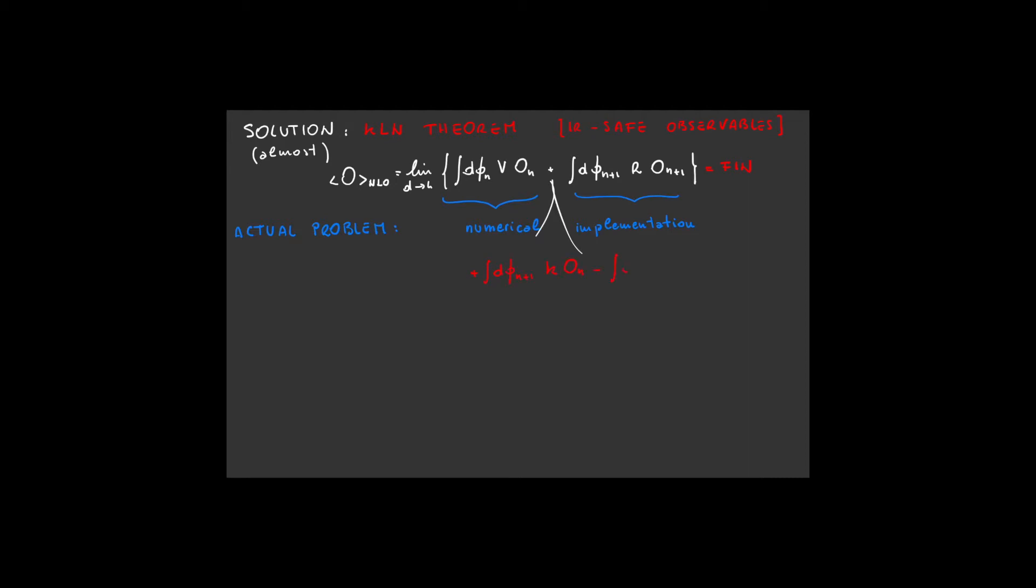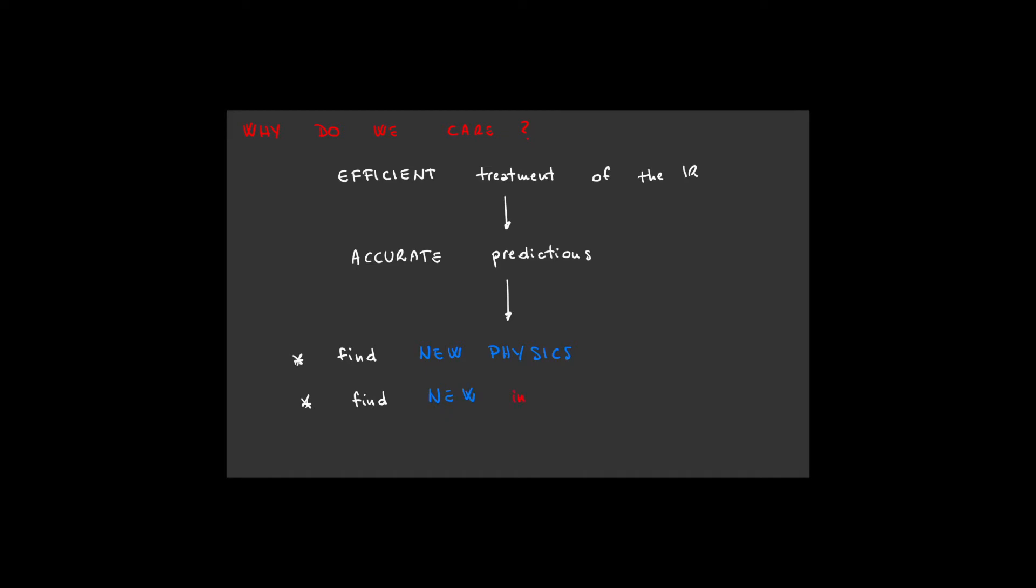By adding and subtracting a counter-term, a function capable of reproducing the phase space singularities of the real matrix element, we can reduce it to a finite quantity. Then, by integrating the counter-term in the single unresolved phase space, we can combine it with the virtual. This way, now both lines of the equation are separately finite in d equals 4, allowing for an efficient numerical integration. Why do we care about subtraction methods? Well, an efficient procedure to treat the infrared singularities is a mandatory step to provide accurate theoretical predictions to compare with experimental data. This is crucial to find new physics or to find something new in the physics that we already know.